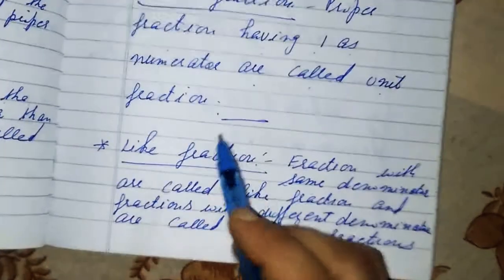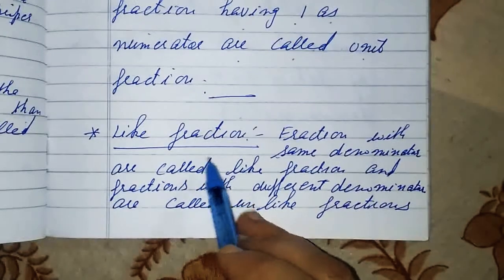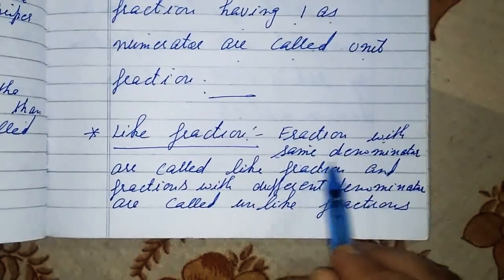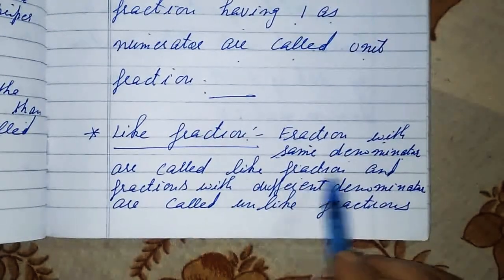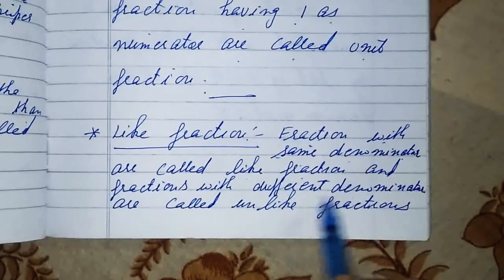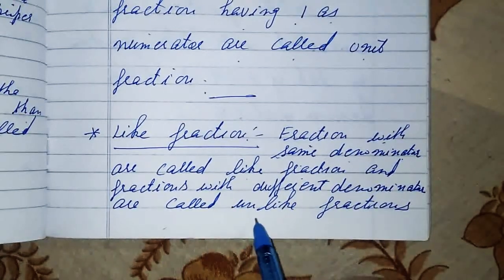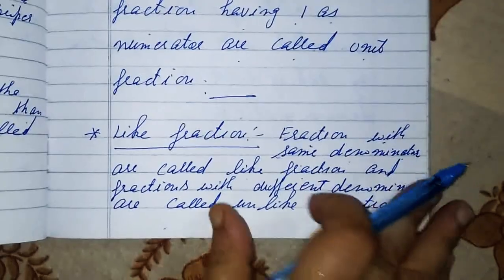Next, like fractions. Fractions with the same denominator are called like fractions, and fractions with different denominators are called unlike fractions.